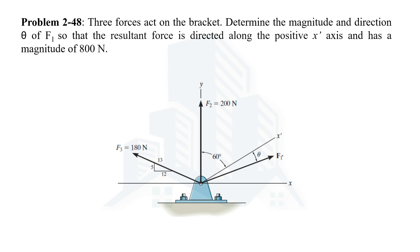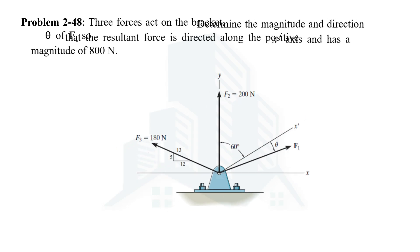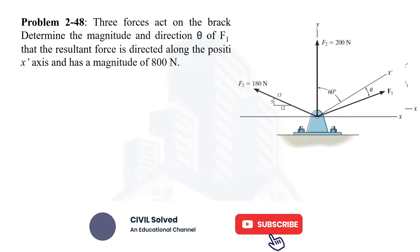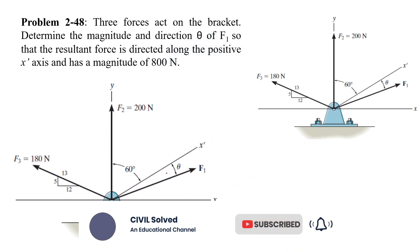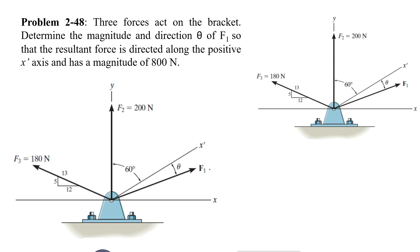These three forces F1, F2, and F3 are making a resultant force, and this resultant force is acting along this direction with a magnitude of 800 Newton. So this is the resultant. Considering this bracket where we have been given these forces, we have been asked to determine the F1 force and the theta angle.